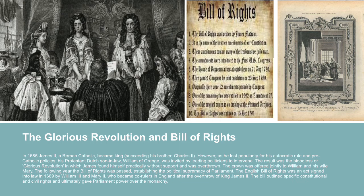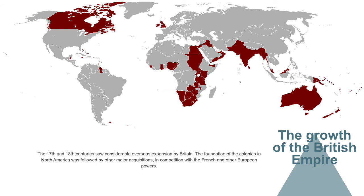In general, the Bill of Rights limited the power of the monarchy, elevated the status of Parliament, and outlined specific rights of individuals. Some of the key liberties included freedom to elect members of Parliament without the king or queen's interference, freedom of speech in Parliament, freedom from royal interference with the law, and freedom from taxation by monarchs without the agreement of Parliament.